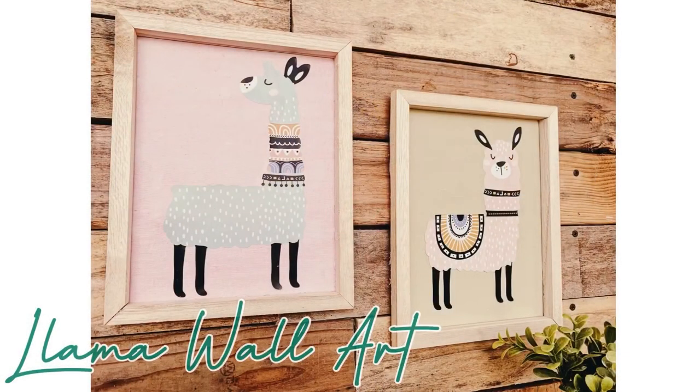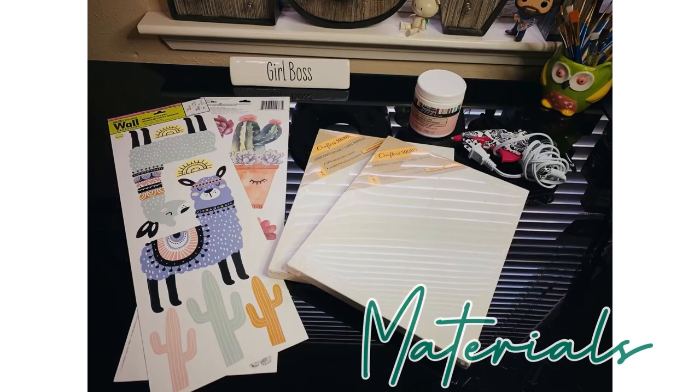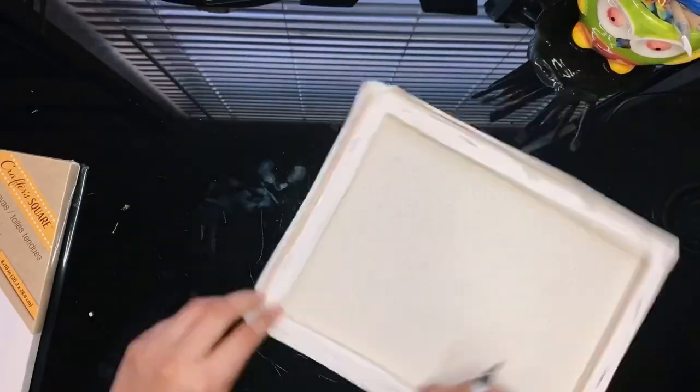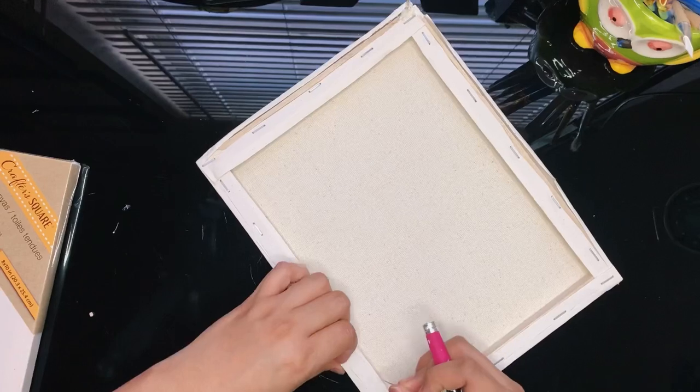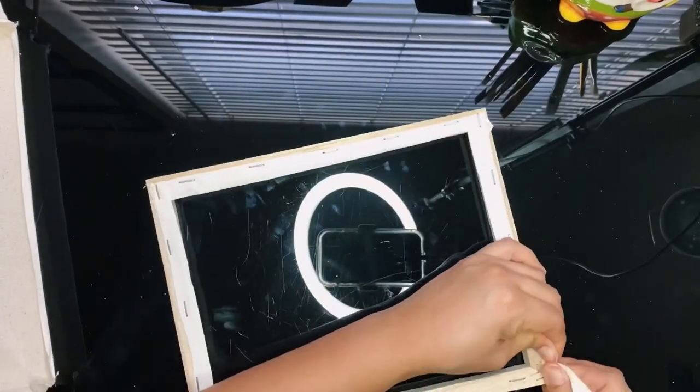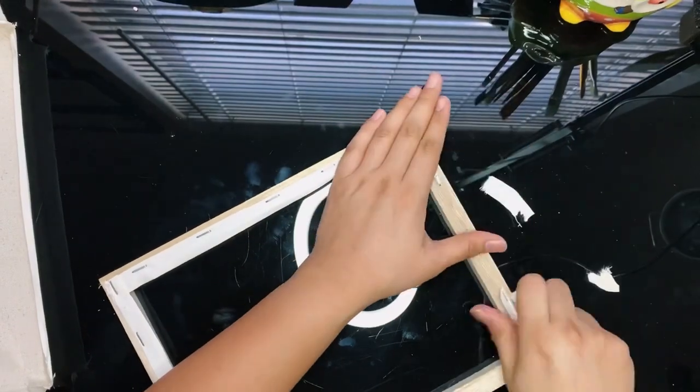Moving along to our second DIY, our Dollar Tree llama wall art. We will begin with two 8x10 canvases. I purchased these at Dollar Tree. I'm reversing my canvas and for this I'm using a craft blade. Now you can remove the excess.